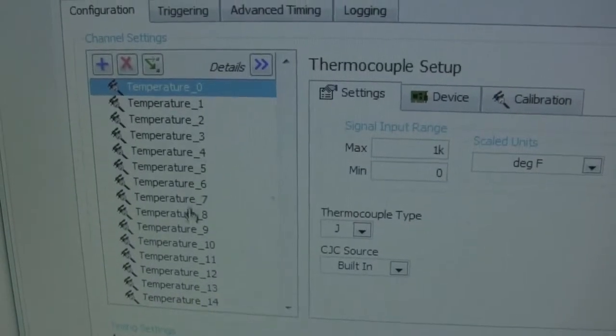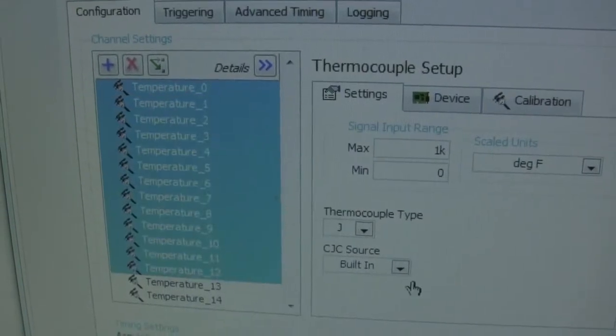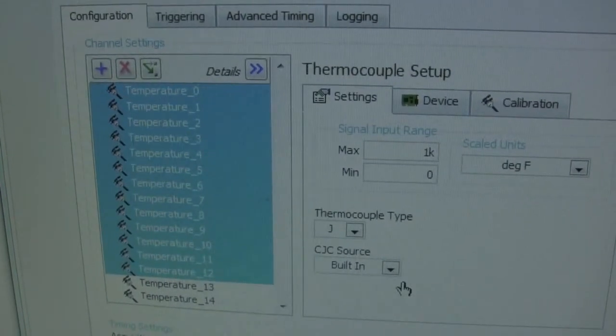Under the configuration tab, select temperature 0, hold down the shift key, then select temperature 12 to highlight each channel in blue.